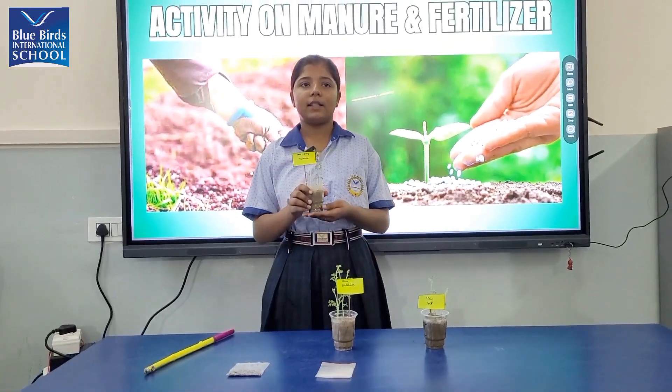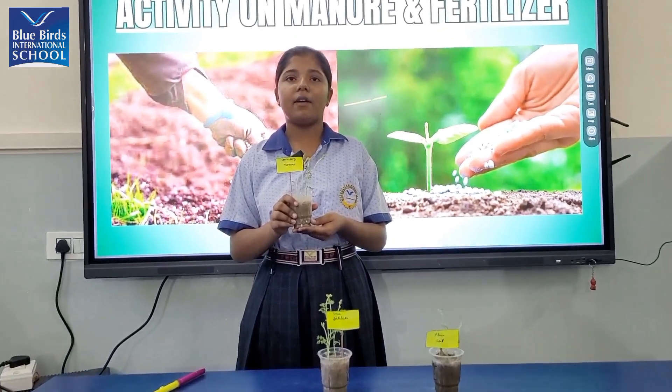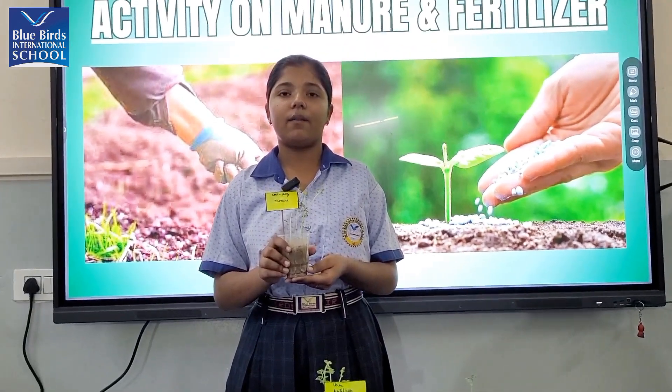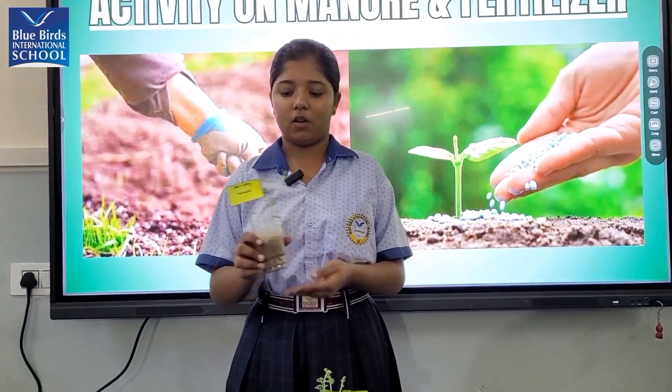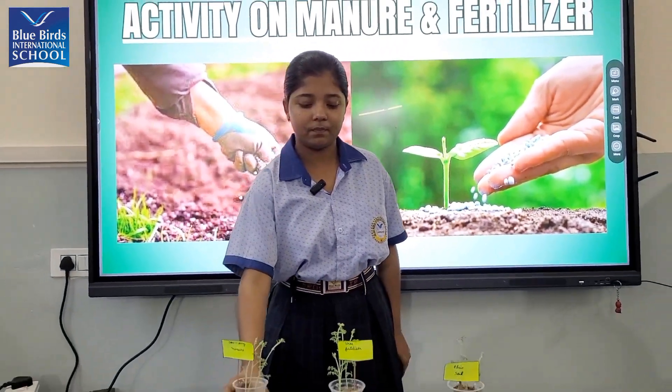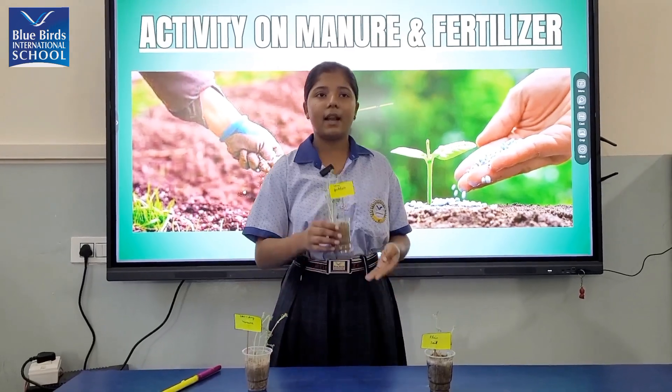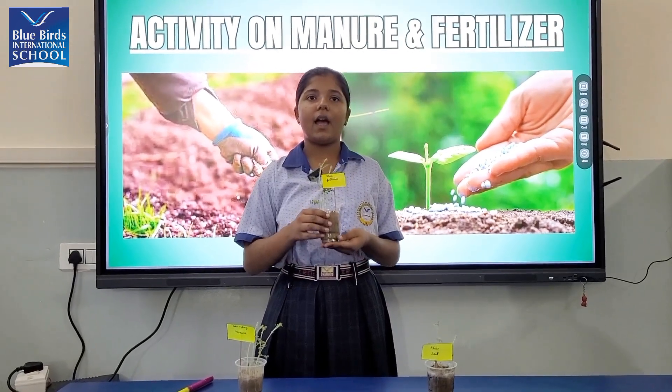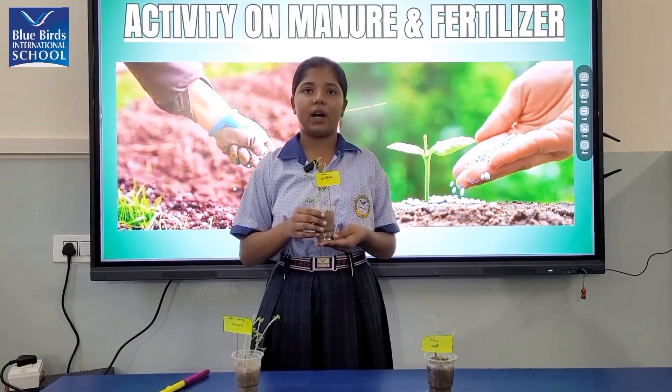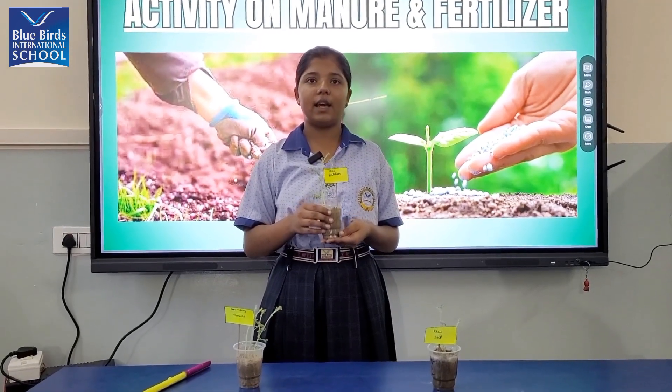In class A, I have added cow dung, which is a manure. In class B, I have added urea, which is a fertilizer.